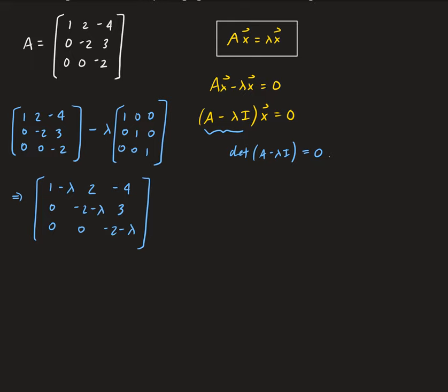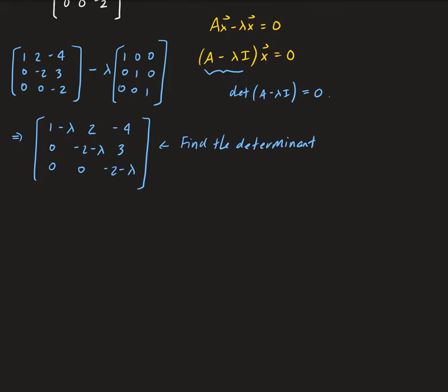Now we want to find the determinant of this and set it equal to zero to find the eigenvalues. This is an upper triangular matrix, and for upper triangular matrices, the determinant is just the product of the main diagonal entries. Since it's already in upper triangular form and factored form, this gives us (1 minus lambda)(negative 2 minus lambda) squared equals zero.